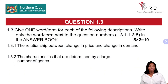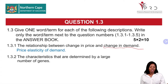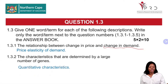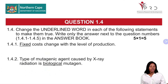Let us move to Question 1.3, where you are expected to give one word or term. Each question carries two marks, with 1.3.1 to 1.3.5. Question 1.3.1: The relationship between change in price and change in demand — the answer is price elasticity of demand, because we speak of the change in demand, not supply. Question 1.3.2: Characteristics determined by a large number of genes — the answer is quantitative characteristics, not continuous variation, since continuous variation is a type of variation.